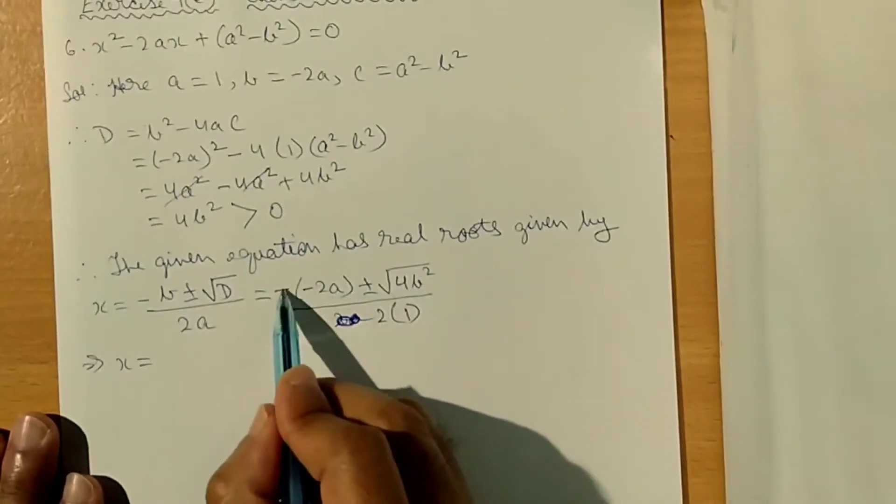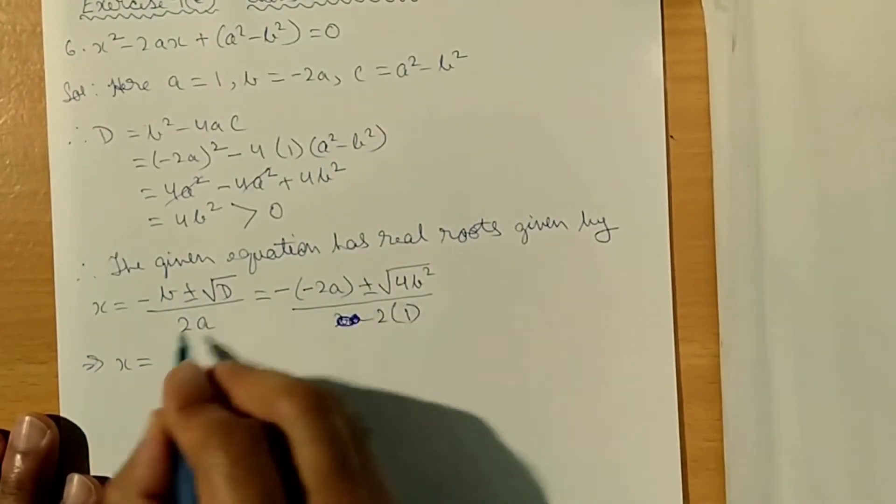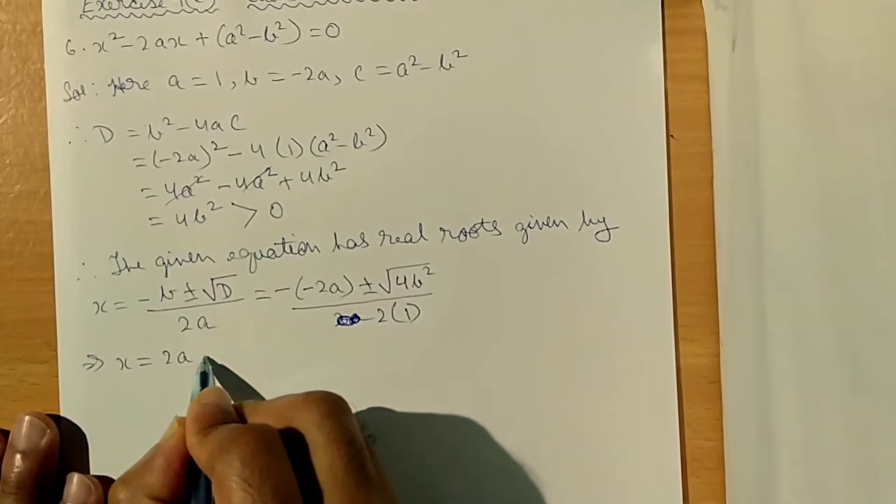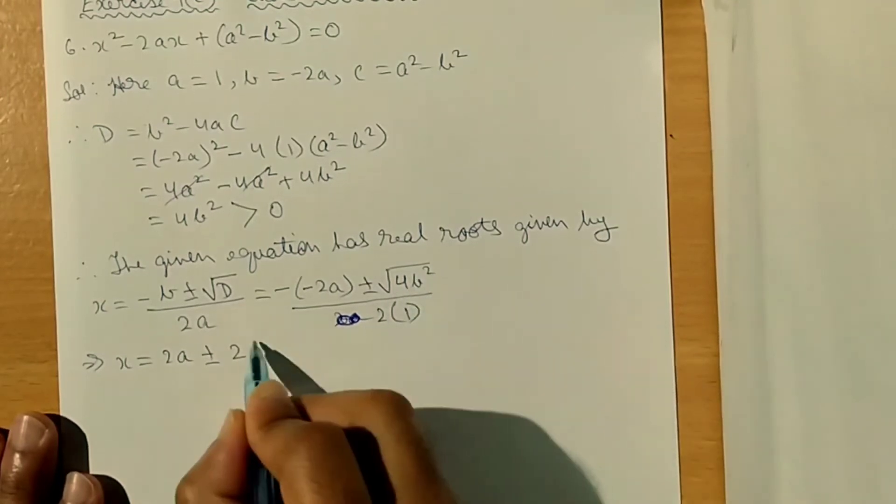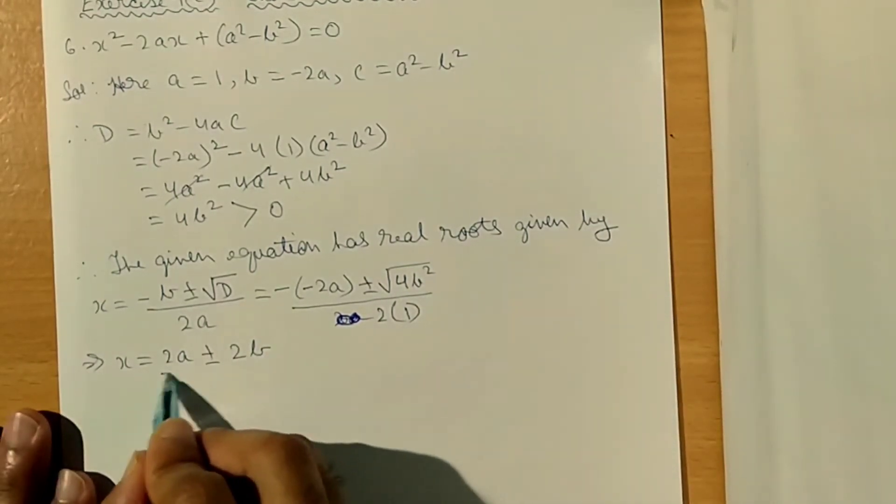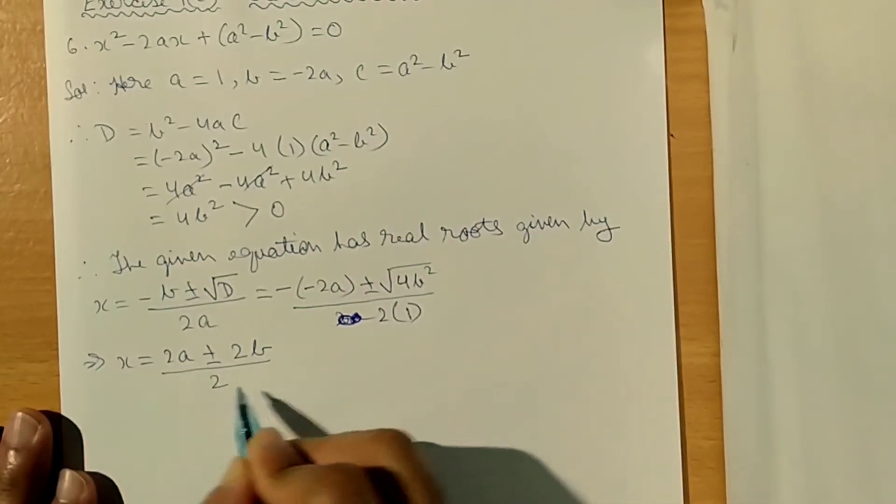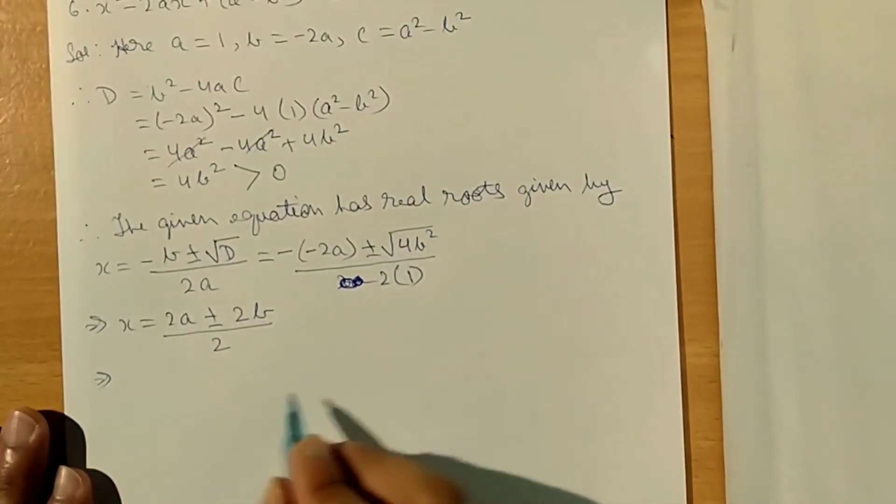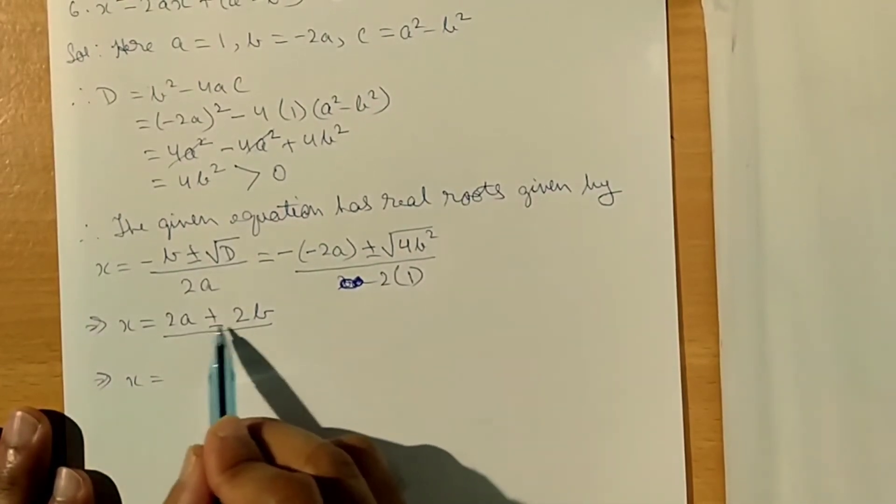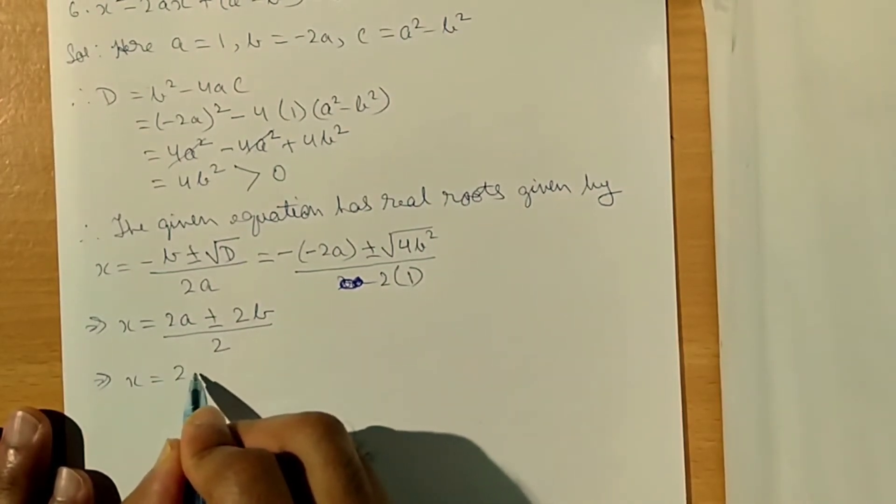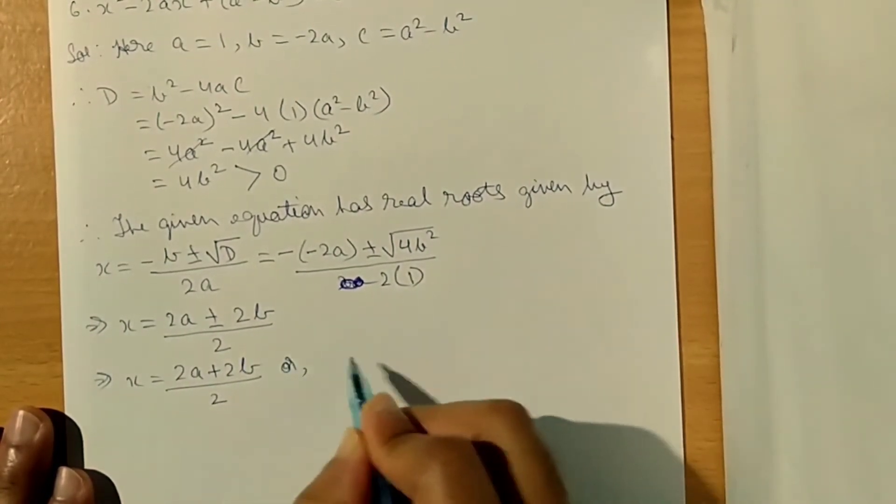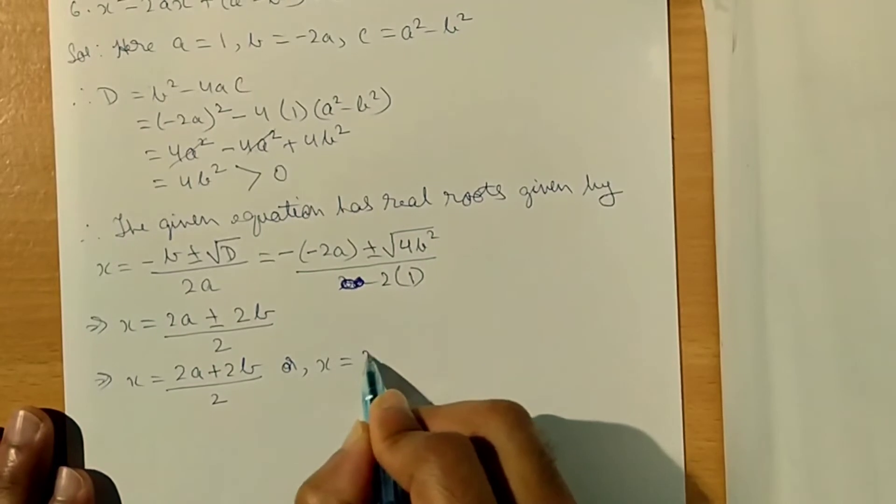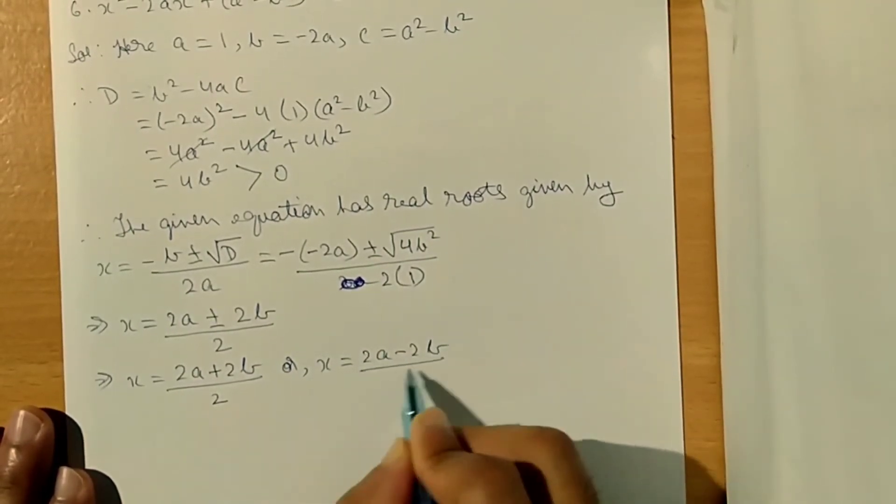This implies x is equal to positive 2A plus minus the square root of 4B squared, which is 2B, divided by 2. So it will be x is equal to 2A plus 2B divided by 2, or x is equal to 2A minus 2B by 2.